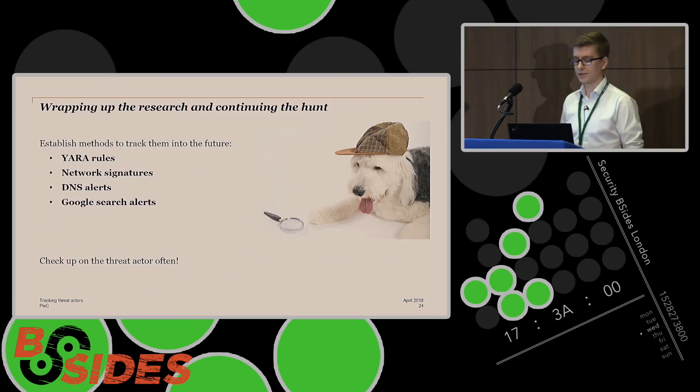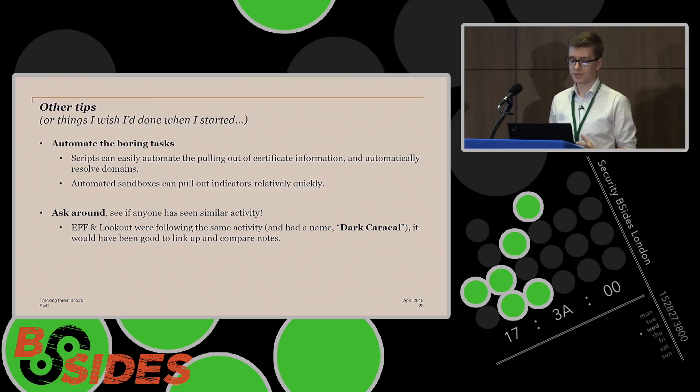So once you've got this and you want to wrap up and start to track the threat actor into the future, then just establish a few methods that you can track them behind the scenes automatically. So things you can use for this are YARA rules, you can also set up network signatures. If you want to know more about this stuff Google it or talk to me afterwards because there's a lot to talk about. Also DNS alerts are good because it means you can set these up where whenever a domain changes to a different IP you know about it. You can also set up Google search alerts as well. So for the strings we saw earlier and these unique names that seem to be repeating, set up a search alert for that and then if a new sample comes up then you'll know about it straight away and just keep checking up often.